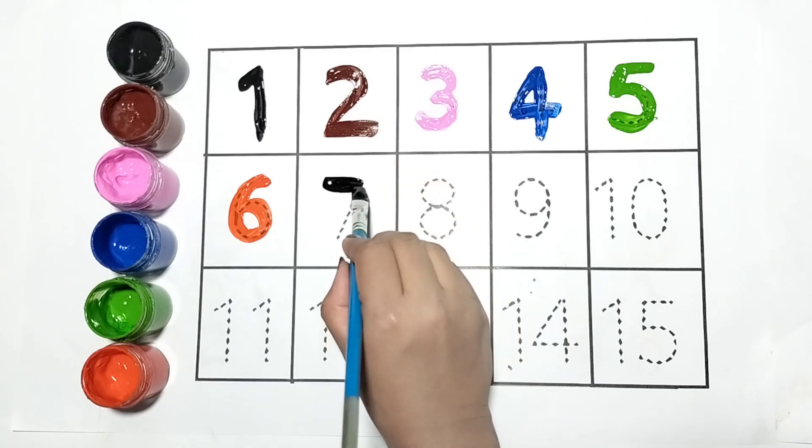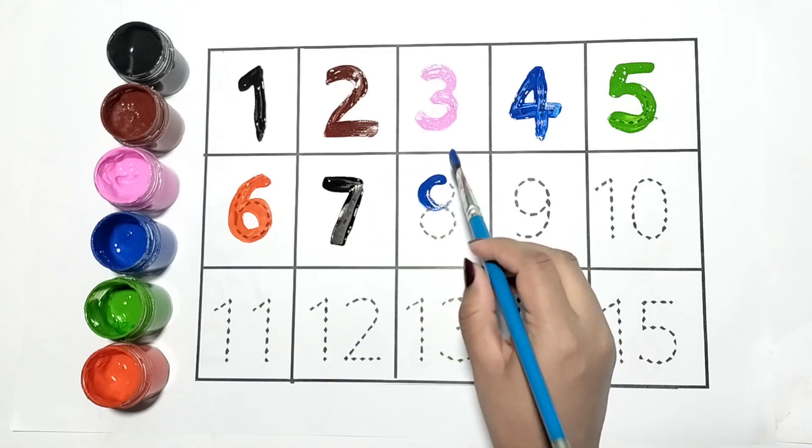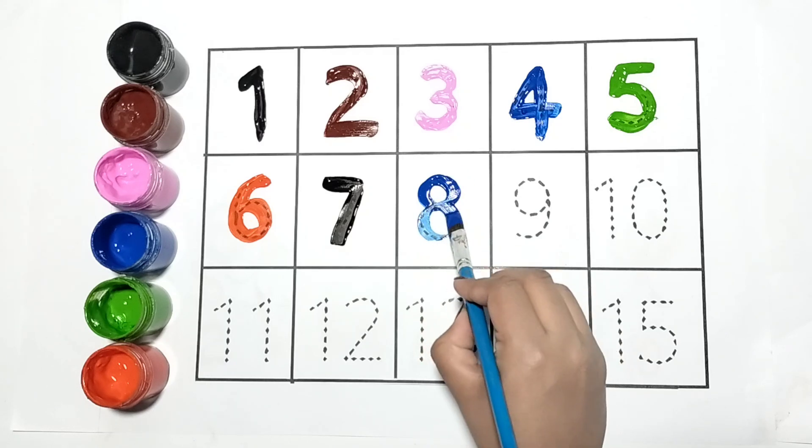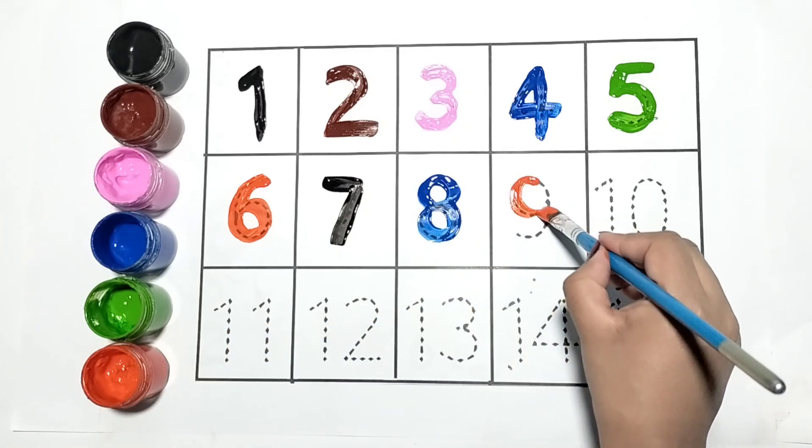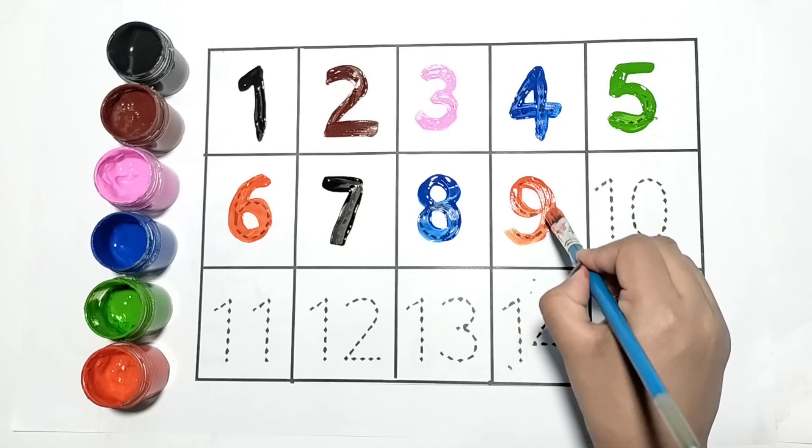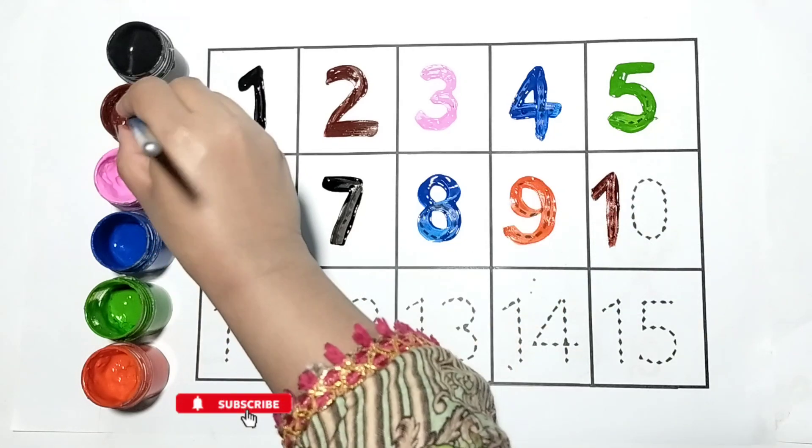Do you know which is the next number? Yes, this is number seven. Let's write number eight, it is in blue color. Now I am writing nine, I am writing it with orange color.